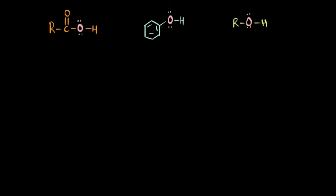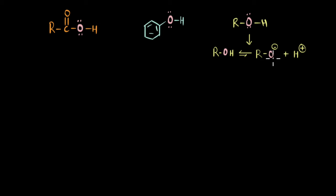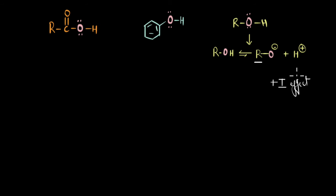Let's first look at the reaction of alcohol. Dissociation of alcohol in water produces the conjugate base, which is an alkoxide ion. Now what can you comment about the stability of our alkoxide ion here? Well, you can see from the first glance itself that this ion doesn't look very stable. The alkyl group of our alkoxide ion is electron donating via the +I effect — the inductive effect. And why is this bad?